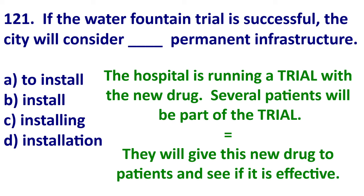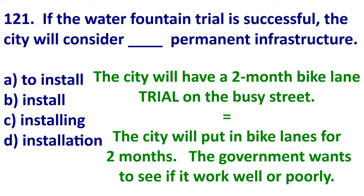Here's an example. The hospital is running a trial with the new drug. Several patients will be part of the trial. So they will give this new drug to patients and see if it's effective, ineffective, is it better, or is it worse? Another example: the city will have a two-month bike lane trial on the busy street. So they will put in the bike lanes for two months — they want to see if it will work effectively.